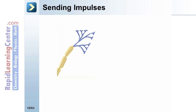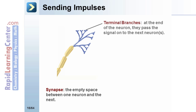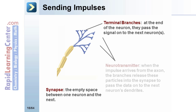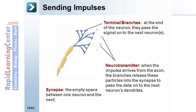Sending impulses: at the synapses — the empty space between one neuron and the next — terminal branches at the end of the neuron pass the signal on to the next neuron. When impulses arrive from the axon, the branches release neurotransmitter particles into the synapse to pass the data on to the next neuron's dendrites.